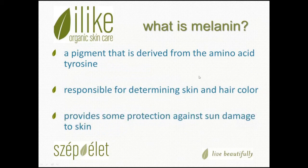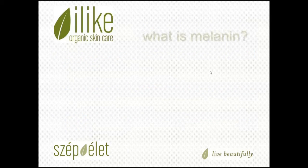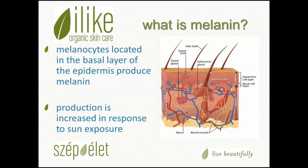So what is melanin? Melanin is a pigment that is derived from the amino acid tyrosine. It's responsible for determining skin color and hair color. It does provide some protection against sun damage to skin. Melanocytes, which are located in the basal layer of our epidermis, produce melanin, and production is increased in response to sun exposure.